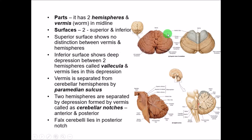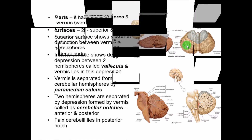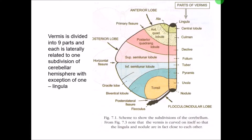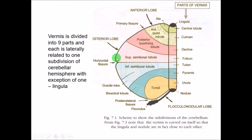There are two main fissures. The primary fissure, seen on the superior surface, separates the anterior lobe from the larger posterior lobe. The posterior lobe is separated from the flocculonodular lobe — the third lobe — by the posterior lateral fissure. There is also the horizontal fissure, a more imaginary fissure that separates the superior surface from the inferior surface.